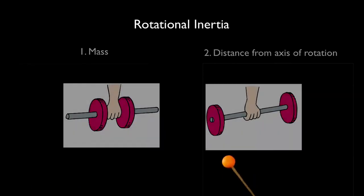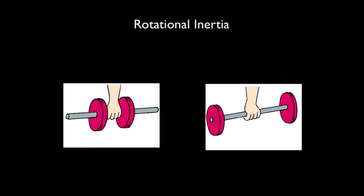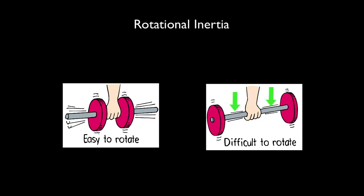Look at these two dumbbells of identical mass. Which is harder to rotate? The one where the mass is distributed farther away from the center.